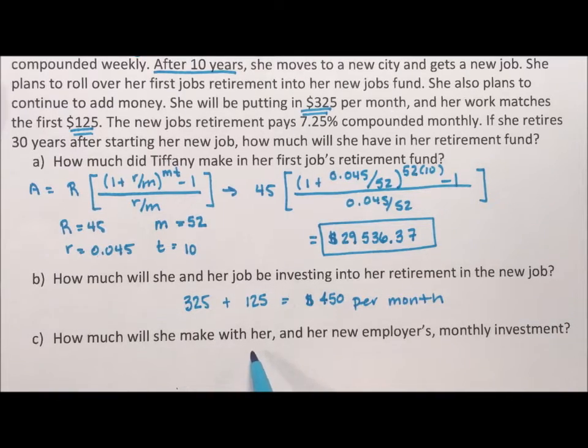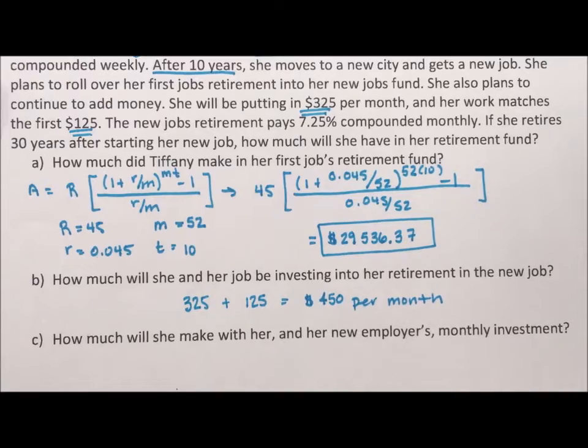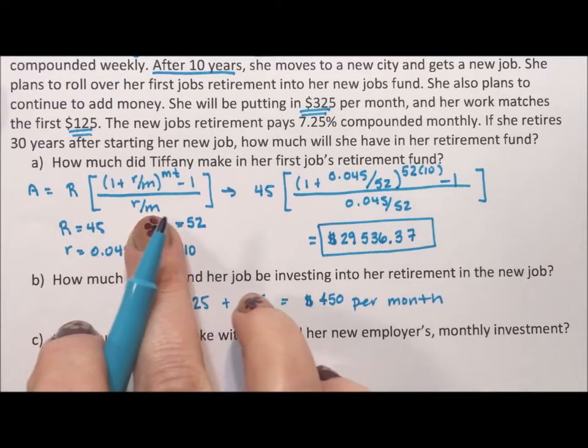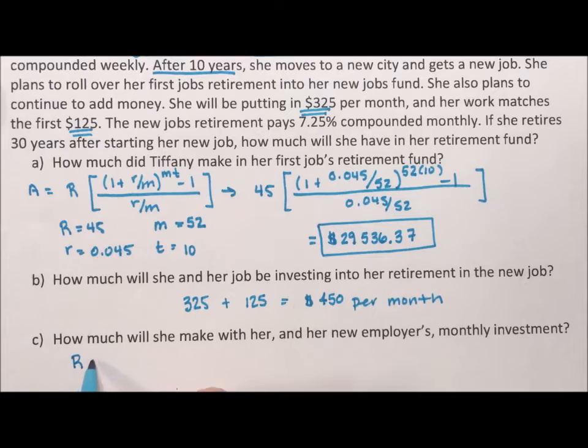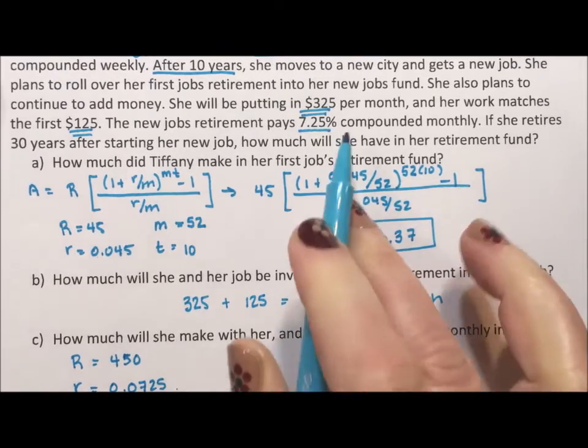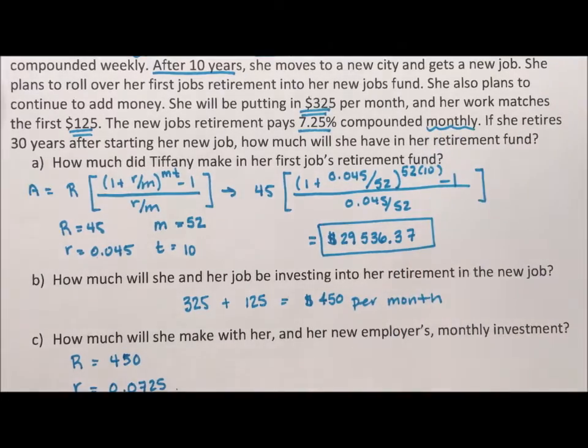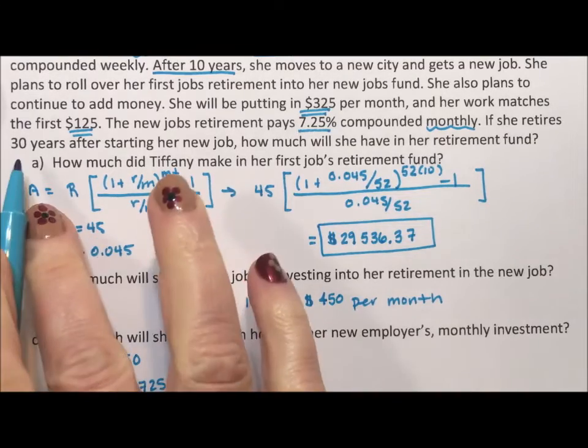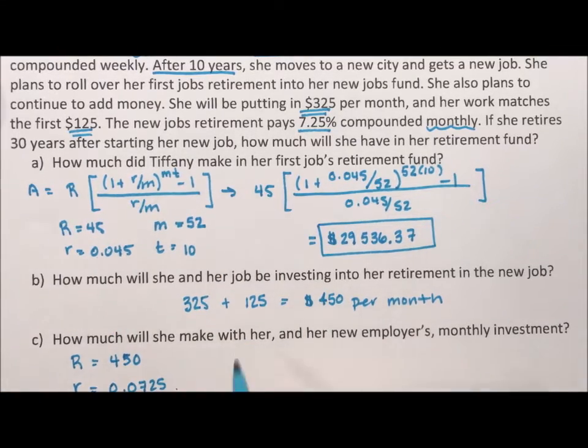How much will she make with her and her new employer's monthly investment? Again we're going to be using the same formula, but now her periodic payment is $450, which is going to be a nice increase. The rate at the new job is 7.25%, so 0.0725. The number of times that it's compounded is monthly, so M is going to be 12, and the number of years we're putting time at 30 years. So for this one, A is going to equal $450...